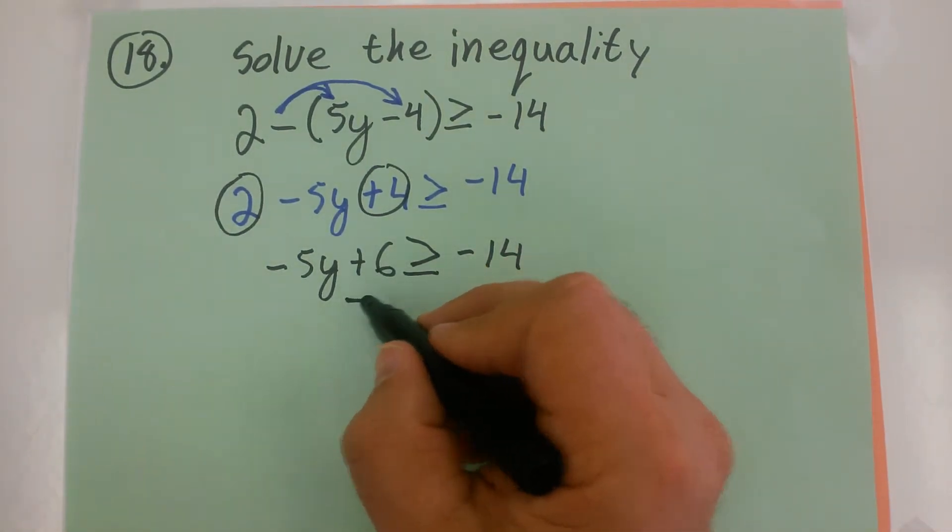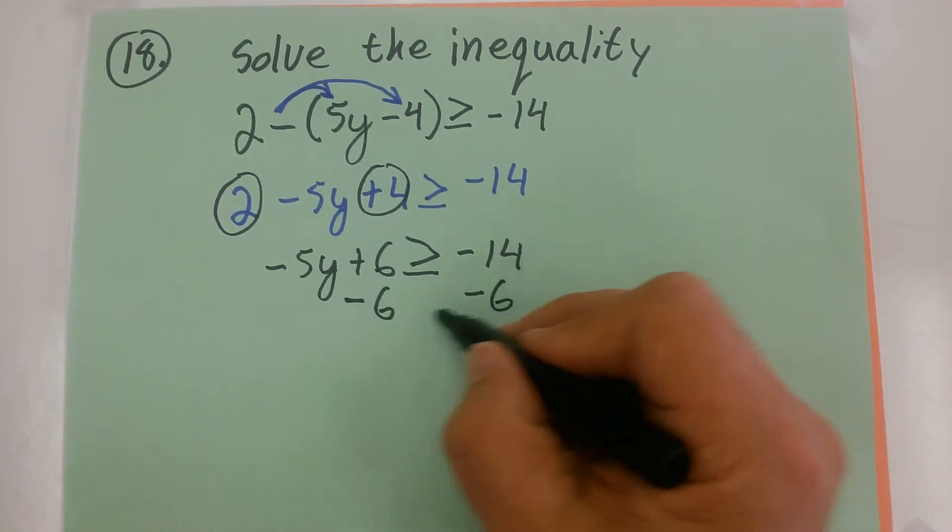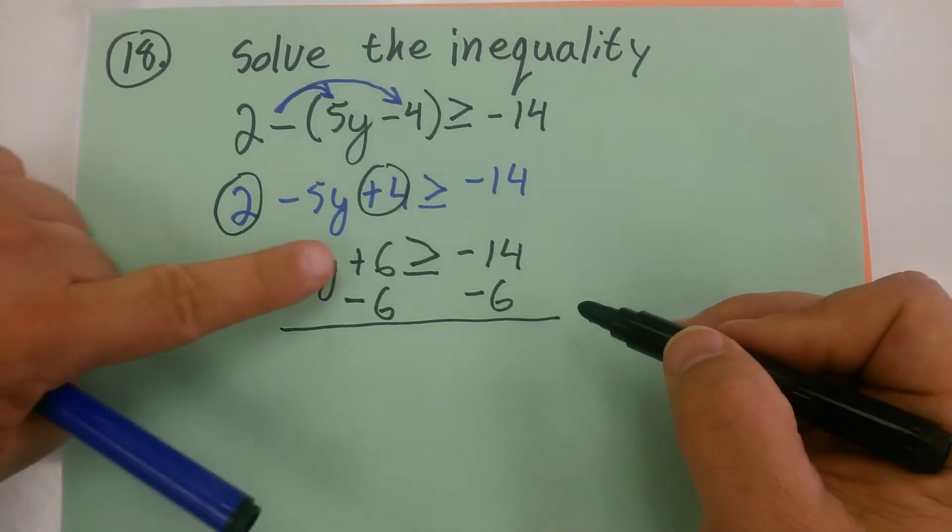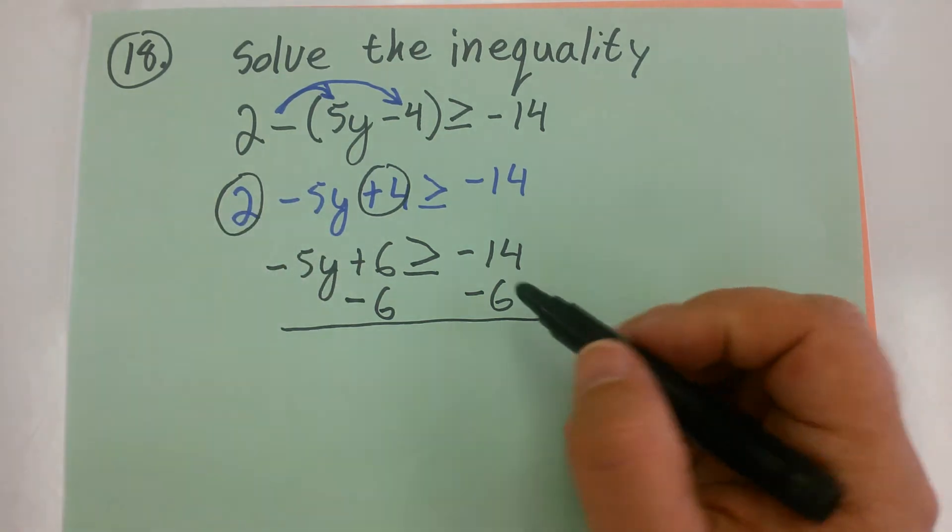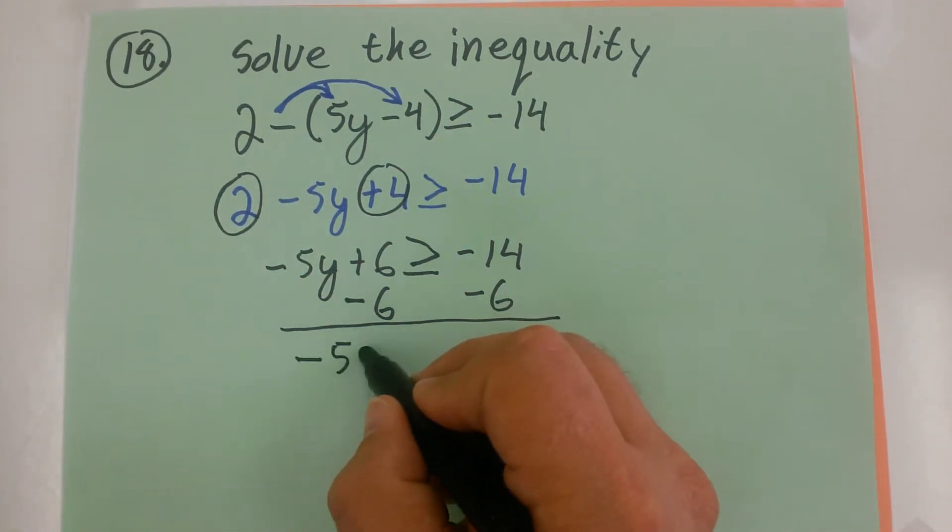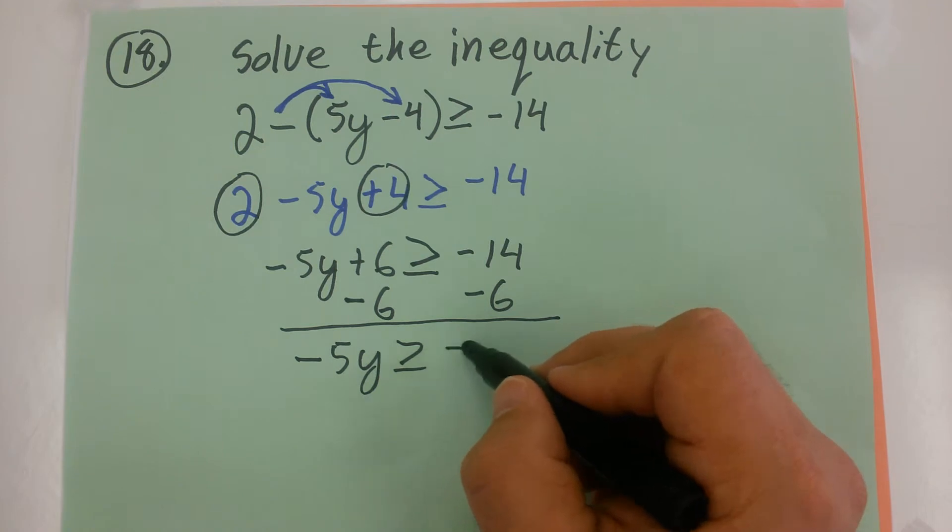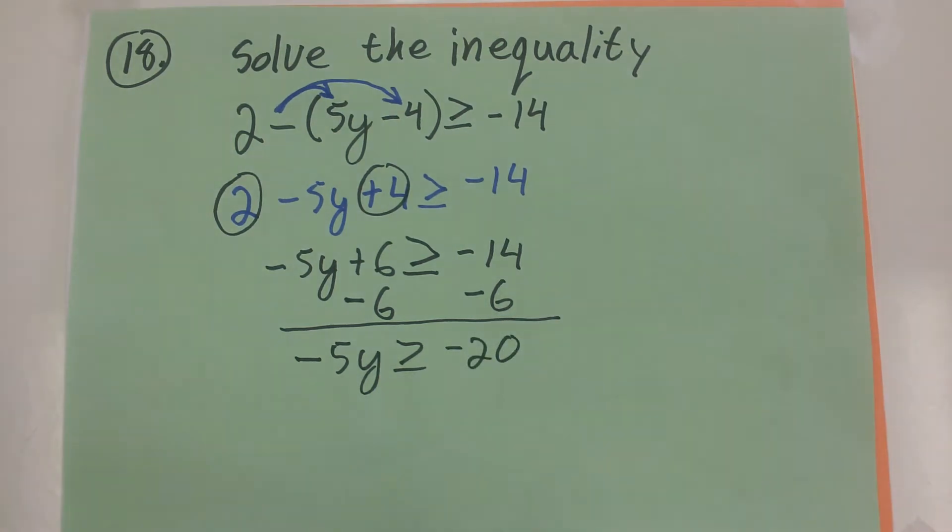Solving the inequality, I'm going to do it like I would an equation. I'm subtracting 6 from both sides. I'm doing the opposite of plus 6. So this is going to give me negative 5Y is greater than or equal to negative 20.